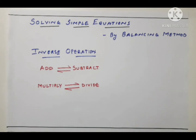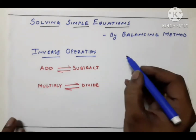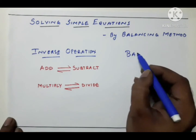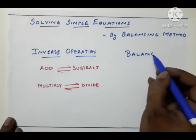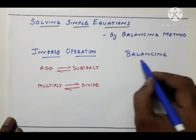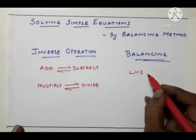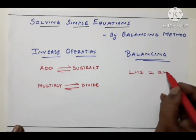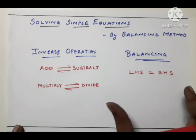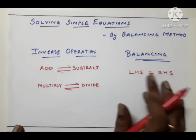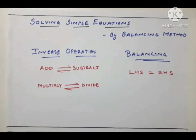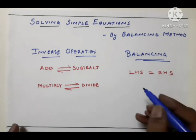The next concept is balancing. The word itself explains it — the left hand side must be equal to the right hand side. When the left hand side equals the right hand side, we say it is balanced, meaning both sides have the same measure.